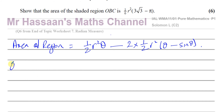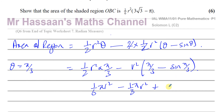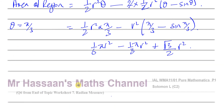We know θ = π/3, which is 60° in radians. Substituting: (1/2)R²(π/3) minus R²(π/3 − sin(π/3)). This gives (1/6)πR² minus (1/3)πR² plus (√3/2)R², since sin(π/3) = √3/2. So we have three terms to add together.